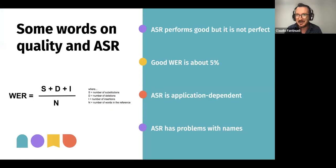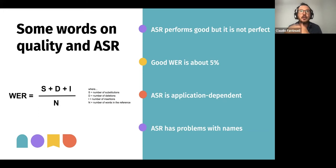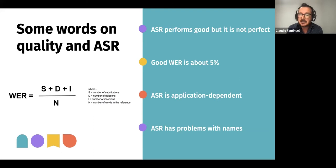One word about quality and speech recognition. Speech recognition is still measured with a word error rate — a comparison between the transcription from a machine and a reference transcription, the gold standard. Speech recognition performs really well now, but it's not perfect. Engines reach something like 5% of errors, meaning 5% of words are wrong.